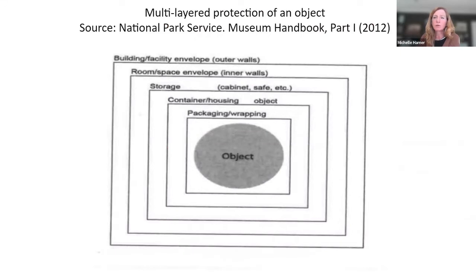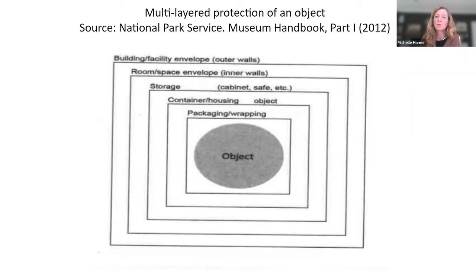In the manual, there's a diagram showing multi-layered protection of an object. If you think of a specimen in your collection — whether it's a herbarium sheet, a pinned insect, or a bottle of mice — there are several layers important for storage. There's the building, then the storeroom, then the storage unit such as cabinets or shelving, then the container housing the object such as a drawer or bottle, then the packaging or wrapping, and finally the object inside.